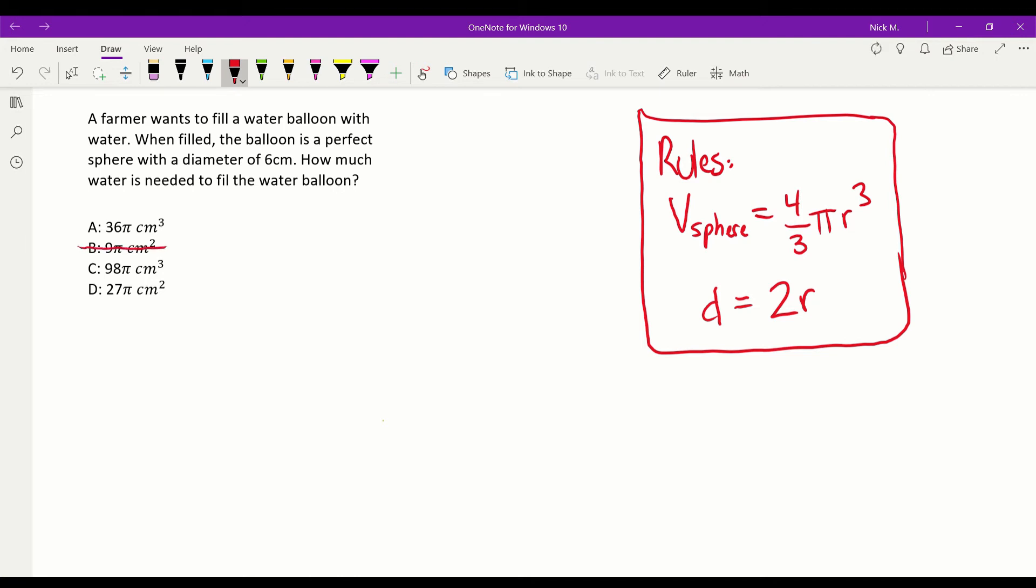And I recognize that it does. B is squared, so that answer is wrong. And D is squared, so that answer is wrong. Immediately, I already know the answer is either A or C. Now let's move on to the rules.